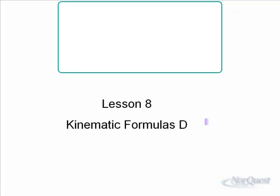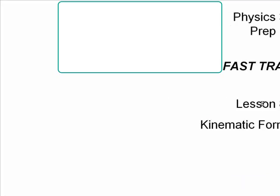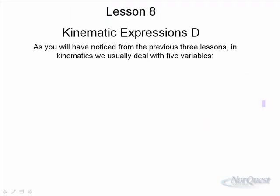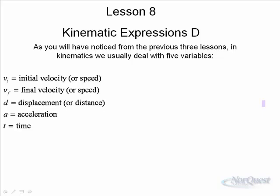The last kinematic equation that we deal with in Physics 20, let's take a look at it. As you have noticed from the previous three lessons, in kinematics we deal with five variables.